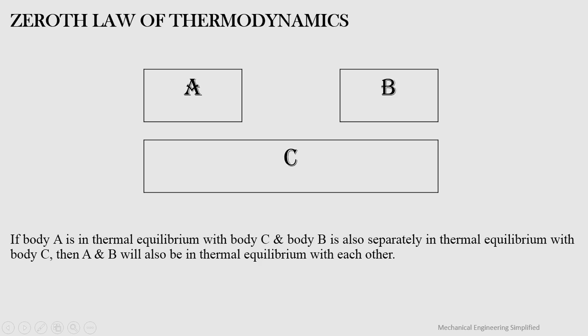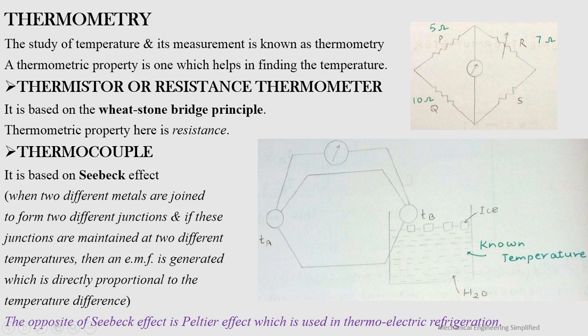This is the very basic law that defines temperature in thermodynamics. If A and C are in thermal equilibrium and B and C are also in thermal equilibrium, then A and B will also be in thermal equilibrium — that is the Zeroth Law. Thermometry is the study of temperature and its measurement.